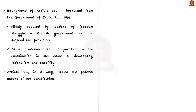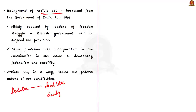The background of this provision is that it was borrowed from the Government of India Act of 1935. Interestingly, when the British brought this provision, all Indian leaders opposed it, and the British did not even bring it into force. But surprisingly, the same opposed provision was incorporated into our Constitution by our own leaders in the name of democracy, federalism, and stability. During constituent debates, Ambedkar said this article would be like a dead letter — no one would use it. But in fact, it became a deadly weapon in the hands of the central government, harming the federal nature of our Constitution.